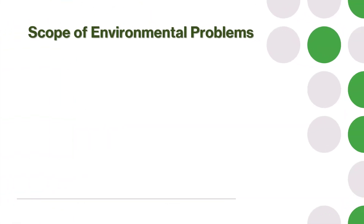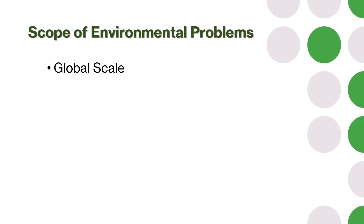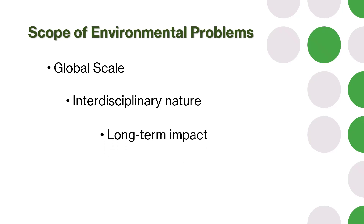Now let us discuss the scope of environmental problems, covering various dimensions. First, on a global scale, many environmental problems go beyond national boundaries and require international cooperation for effective solutions. Second, environmental problems are interdisciplinary in nature, requiring knowledge from multiple disciplines including science, economics, policy, and social sciences. Third, environmental problems have a long-term impact, necessitating sustainable practices and forward-thinking solutions for future generations.